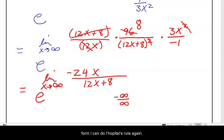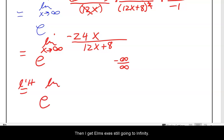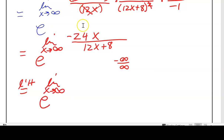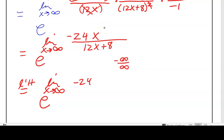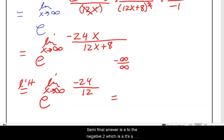Applying L'Hôpital's rule again: the derivative of negative 24x is negative 24, and the derivative of 12x + 8 is 12 (derivative of 8 is 0). So negative 24 divided by 12 gives negative 2. My final answer is e to the negative 2.